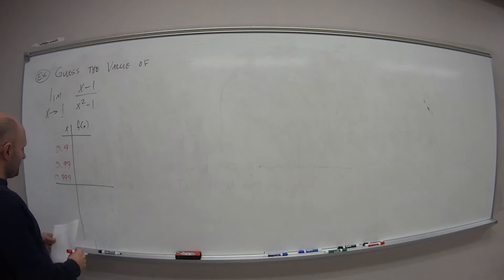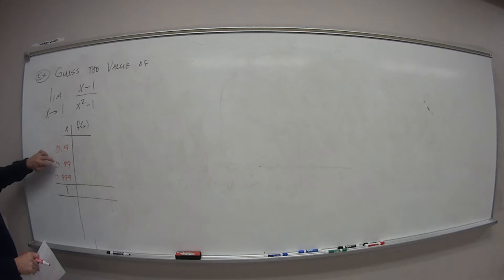So you can see that if I put in 1 here as the value I'm getting closer to, I go 0.9, 0.99, 0.999, getting closer and closer to 1 without actually hitting 1.